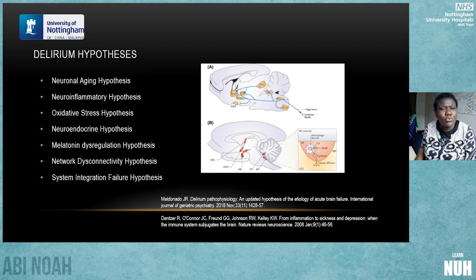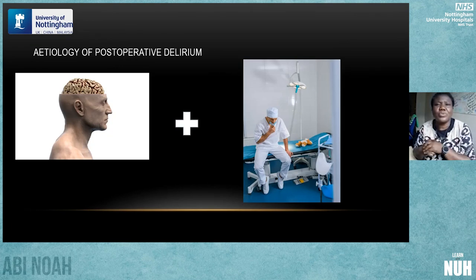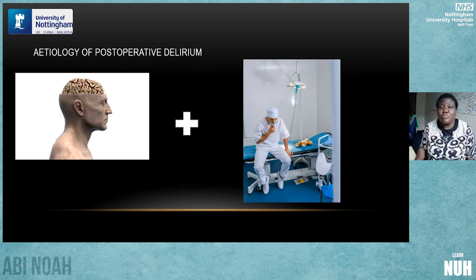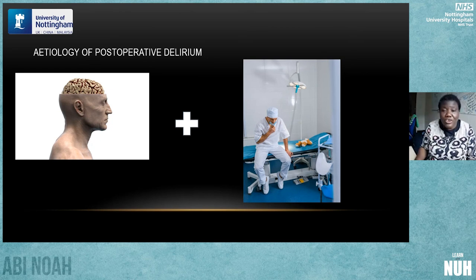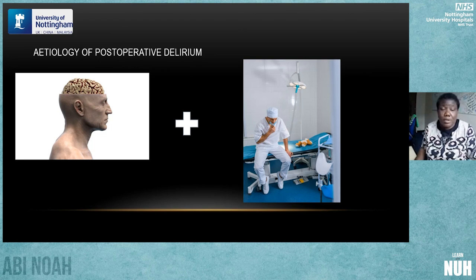My simplified take on the etiology: the patient comes to hospital with his brain and its intrinsic vulnerability. We then add what we do to them in hospital — being admitted, having an operation, how we interact with them, whether we provide familiar environmental cues, and whether we give them their hearing aids and glasses. The combination of intrinsic vulnerability and hospital-related factors results in occurrence or not of postoperative delirium.